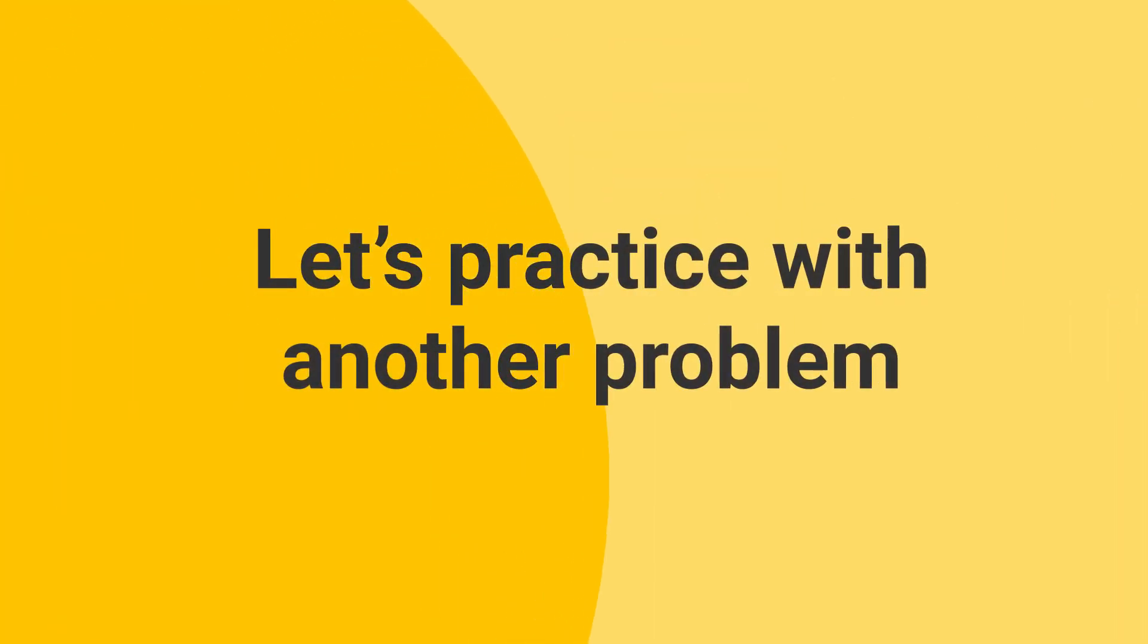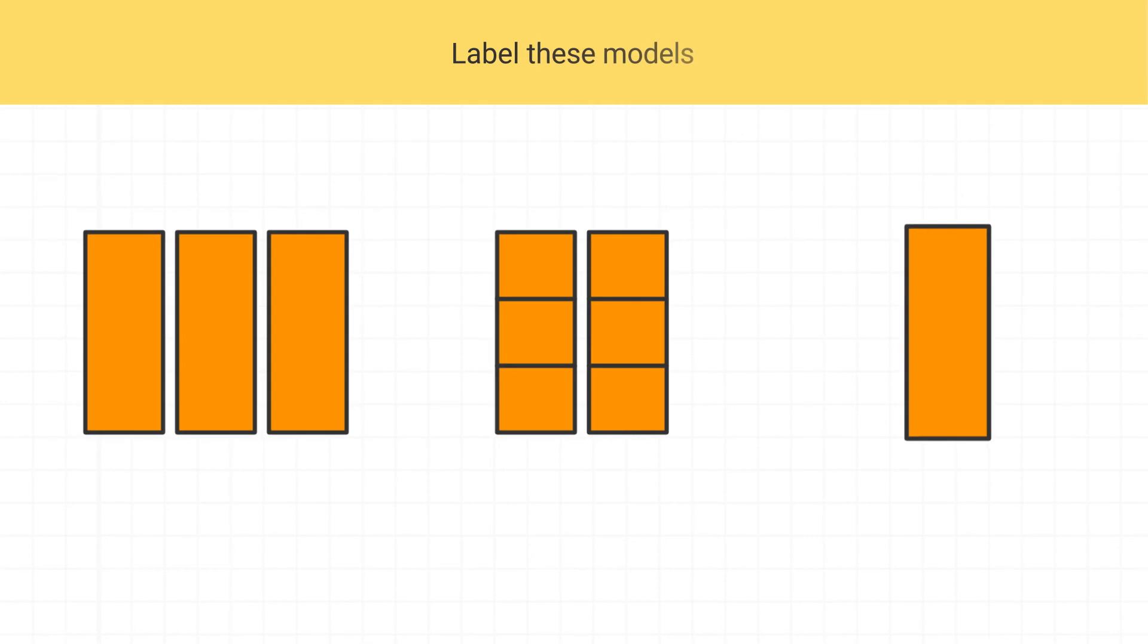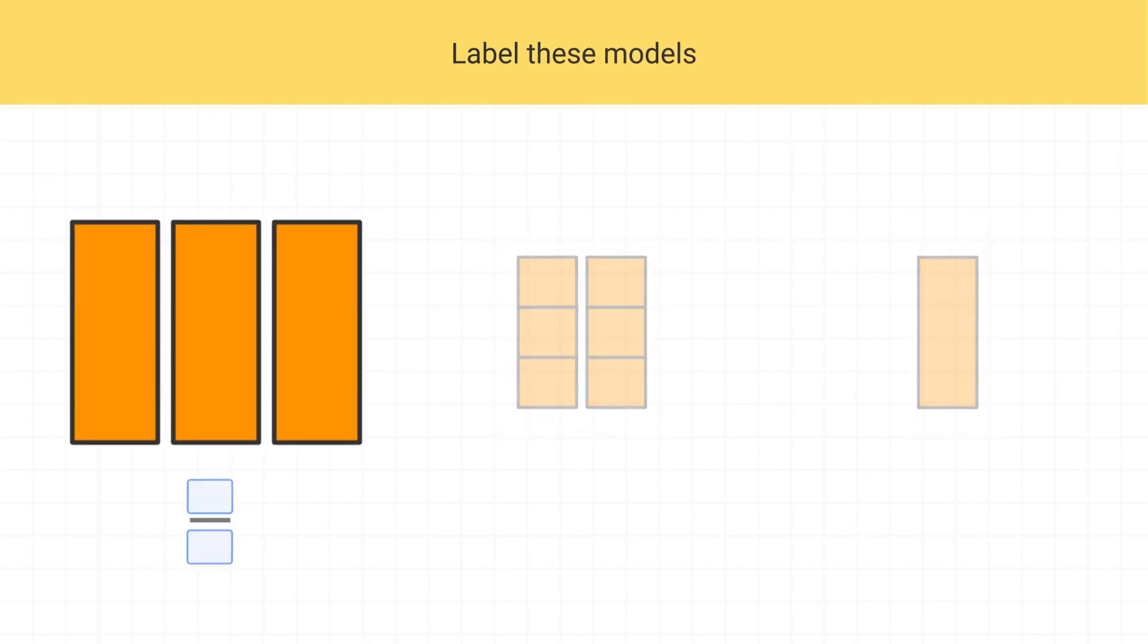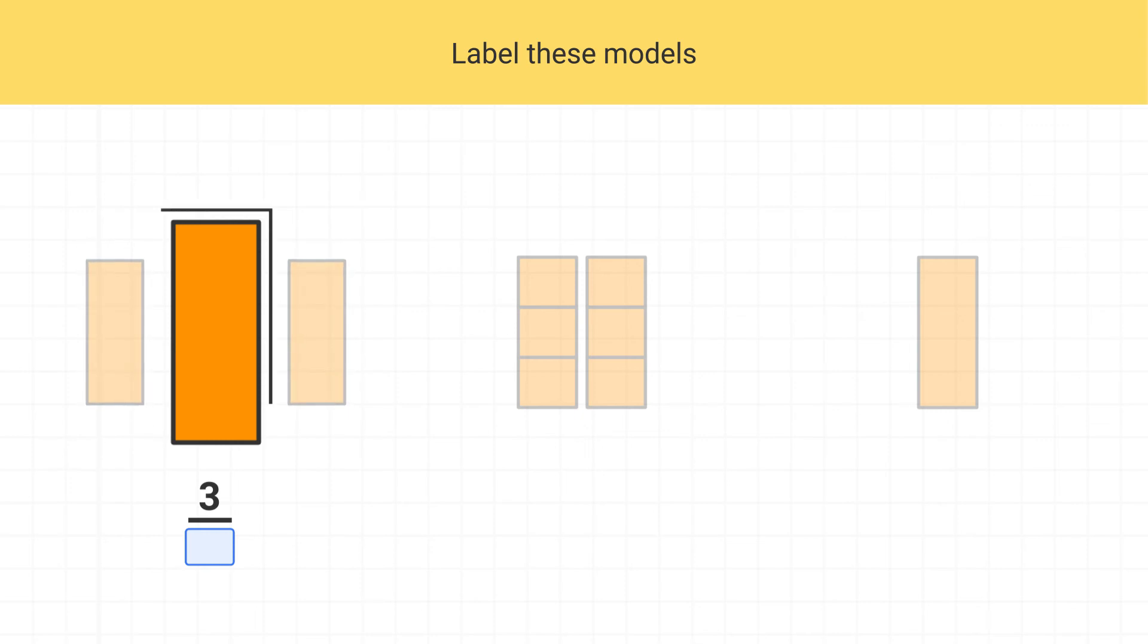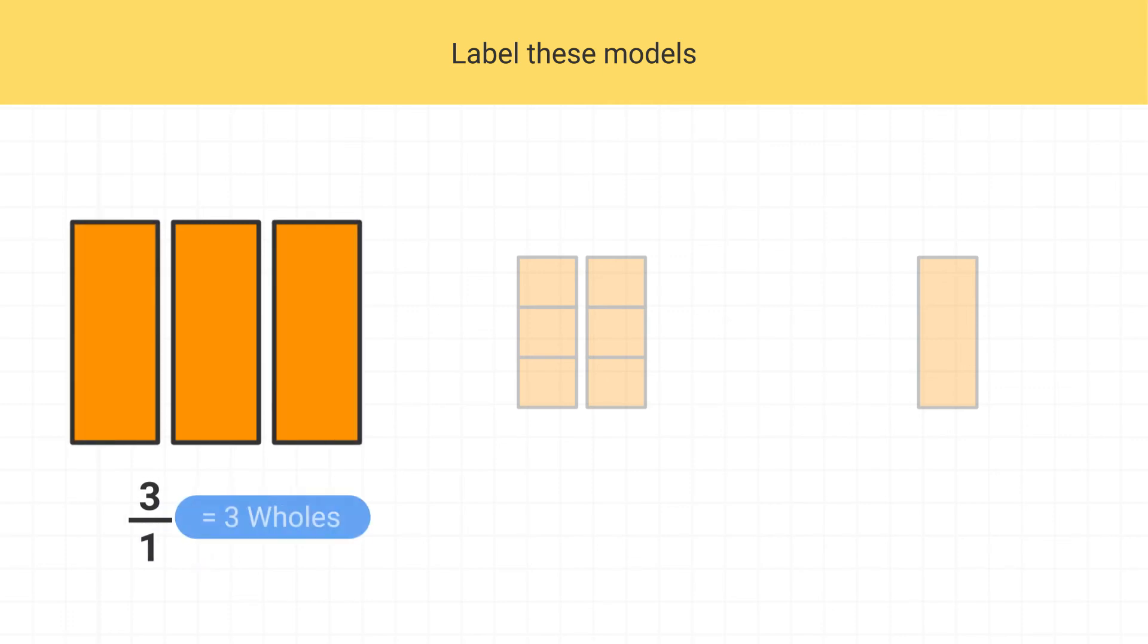Let's practice with another problem. Let's label these models. Starting with this first model, I see I have 3 rectangles, or 3 pieces. So my numerator will be a 3. But what should my denominator be? Well each piece is a whole rectangle. It hasn't been split up at all, so we use a denominator of 1. It's 3 over 1, or 3 wholes.